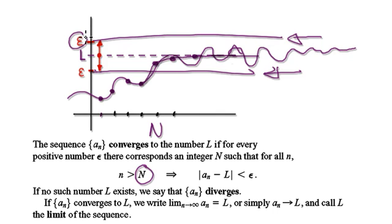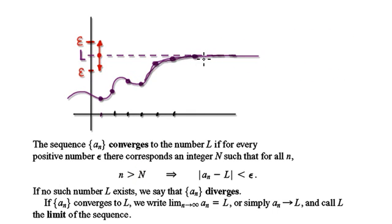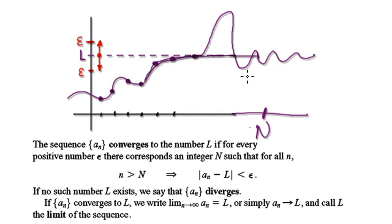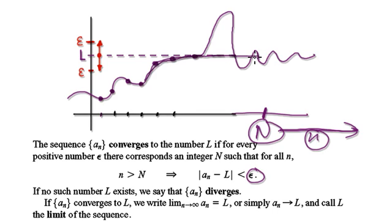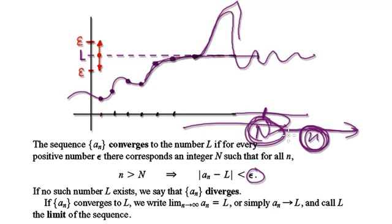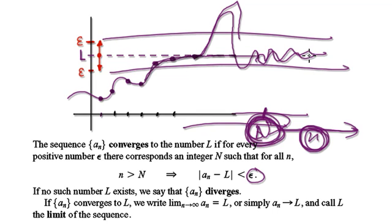So it can do whatever it wants before capital N, but it must stay within these two lines. So if a sequence does something like this but then converges, you would set your capital N to be somewhere over here — because then all the small n beyond capital N falls within your tolerance. So even though it's doing this early on, it can still converge. Just move your capital N to the right, as long as all terms beyond capital N lie within these two lines. I will continue in the next video.